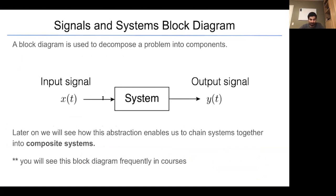One of the things that you will see is a block diagram in signal processing. You have an input signal x that goes into a system. And then you have an output signal y. In this case, the domain of the signal is time. A block diagram is used to decompose a problem into components. So you take x, you put it into a system, and you get as output y. Later on, you will see how this abstraction of systems enables us to chain systems together into composite systems.